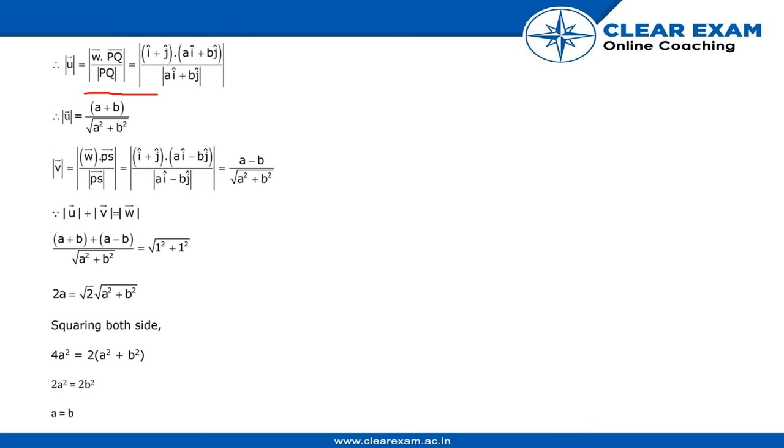And u + v is equal to w vector: (a + b) / (a² + b²) + (a - b) / (a² + b²) equals 1 / √(1² + 1²). So 2a = √2 √(a² + b²).